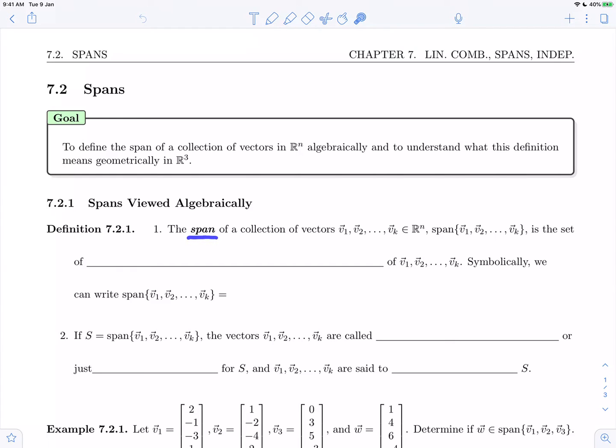The span of a collection of vectors v1, v2, up to vk in R^n is written as span(v1, v2, ..., vk), and it is the set of all possible linear combinations of these vectors. So the set of all possible linear combinations of v1 through vk is called the span of these vectors.